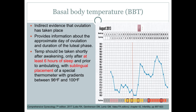Basal body temperature is an indirect evidence that ovulation has taken place. This provides information about the approximate day of ovulation and duration of the luteal phase. The temperature should be taken shortly after awakening after at least 6 hours of sleep and prior to ambulating, with sublingual placement of a special thermometer with gradients between 96°F and 100°F. After plotting the temperature daily for one cycle, a biphasic pattern signifies that the patient is ovulatory, while a monophasic pattern signifies the patient may be anovulatory.